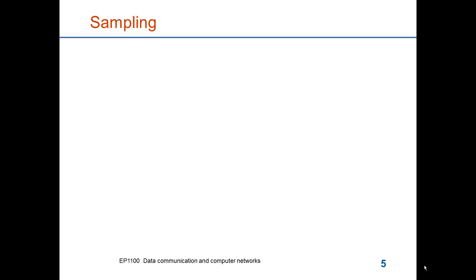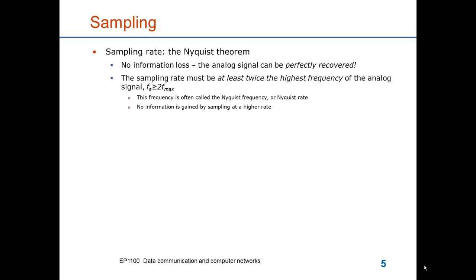Sampling is the process to go from an analog signal to a time discrete signal. We do that by sampling the signal, meaning that we read the signal value at specific points in time. If we do this correctly, we can recover the analog signal without any information loss. But then we have to obey a certain sampling rate. This is given by a theorem called the Nyquist theorem. It states that you must sample at least twice as fast as the highest frequency of the analog signal. So we denote this by Fs being the sampling frequency, so it has to be at least twice as high.